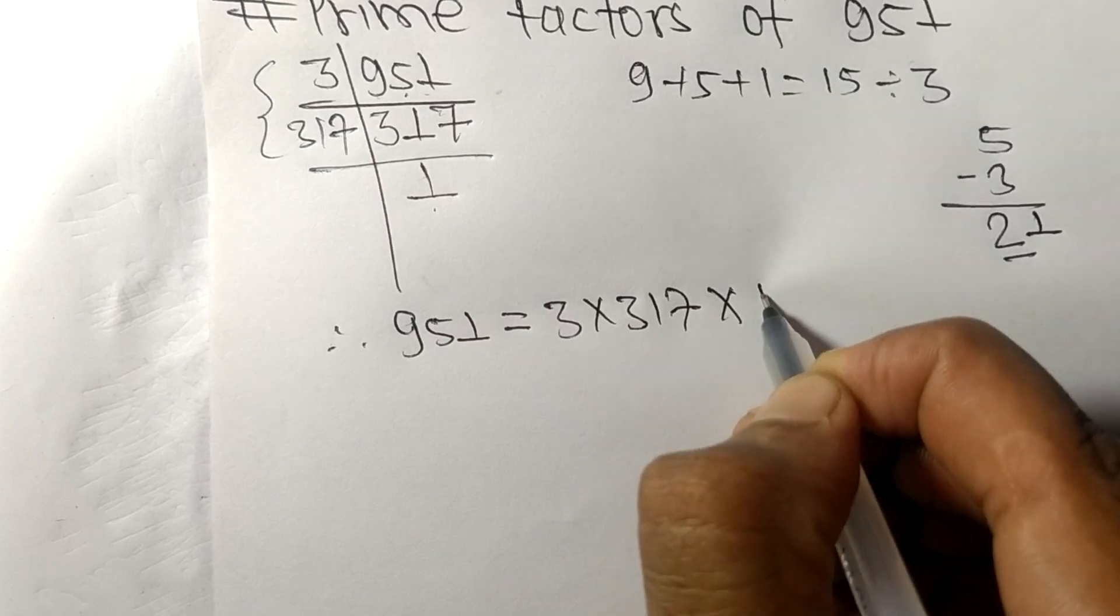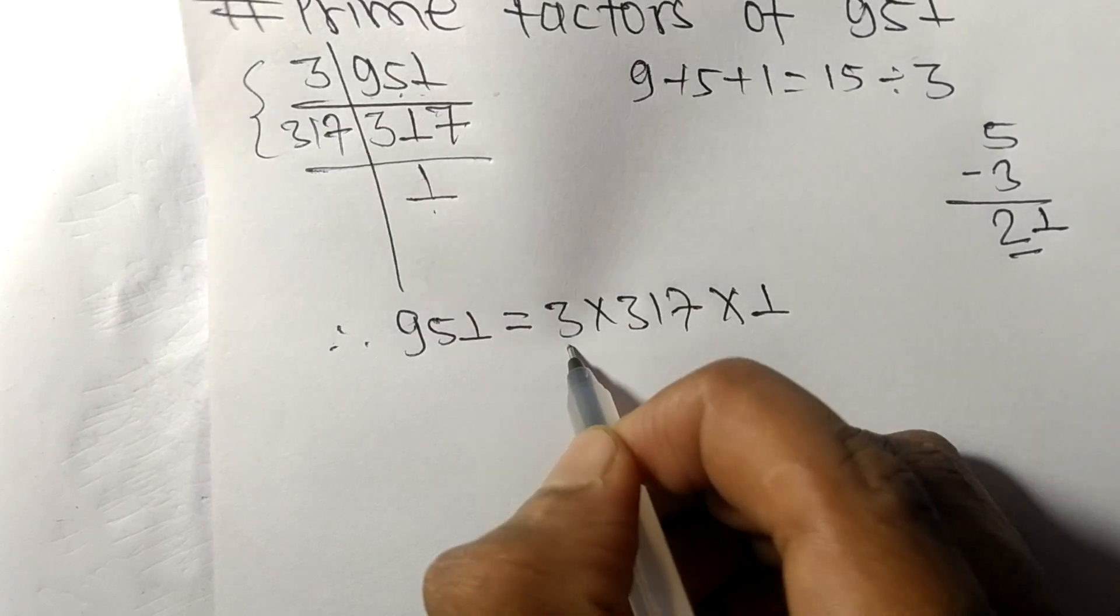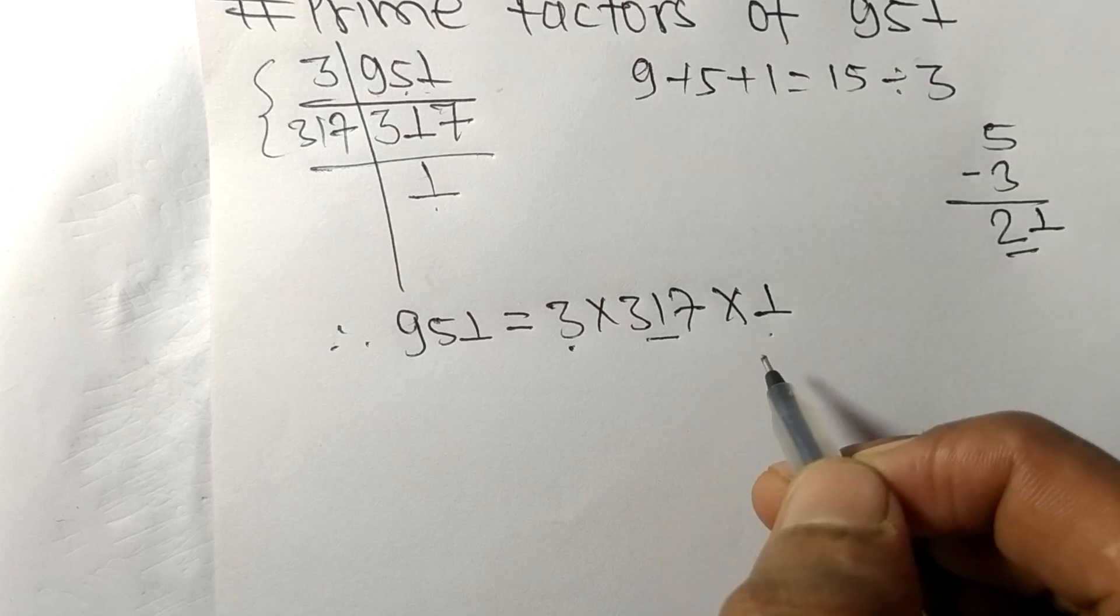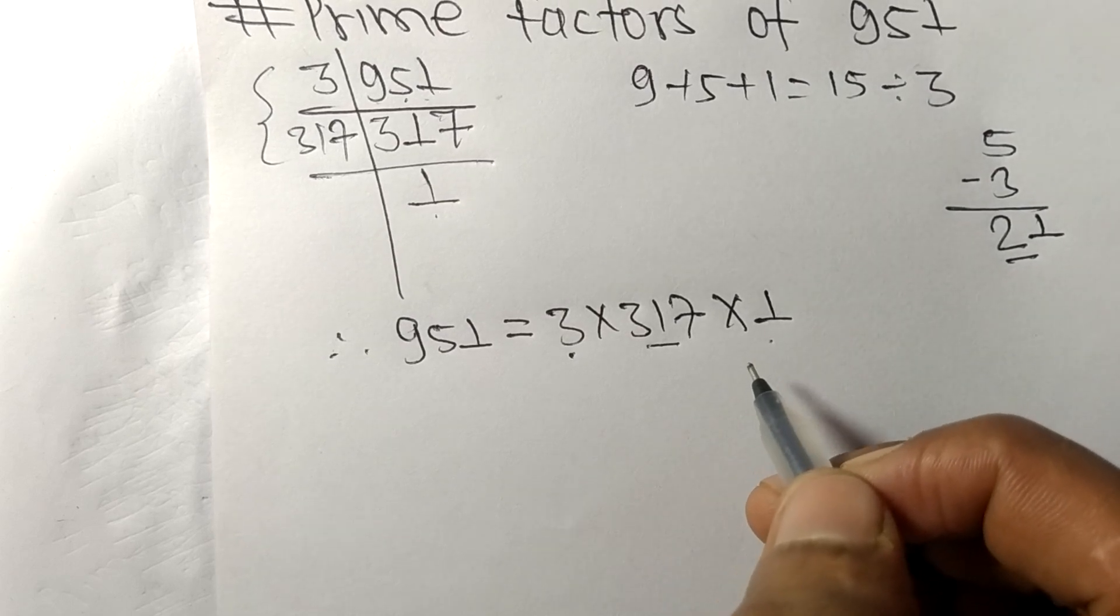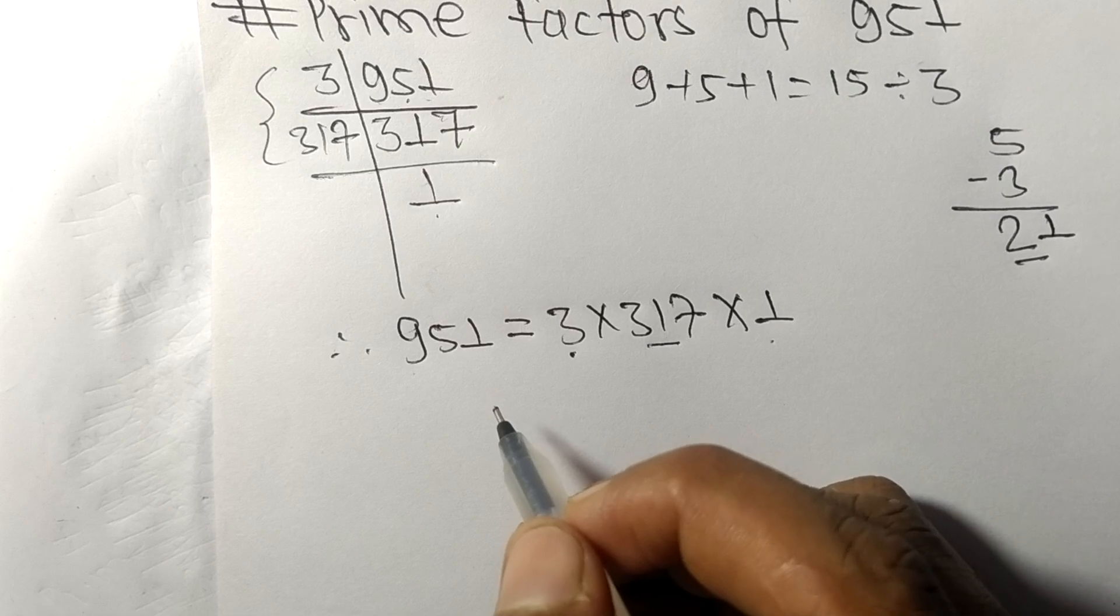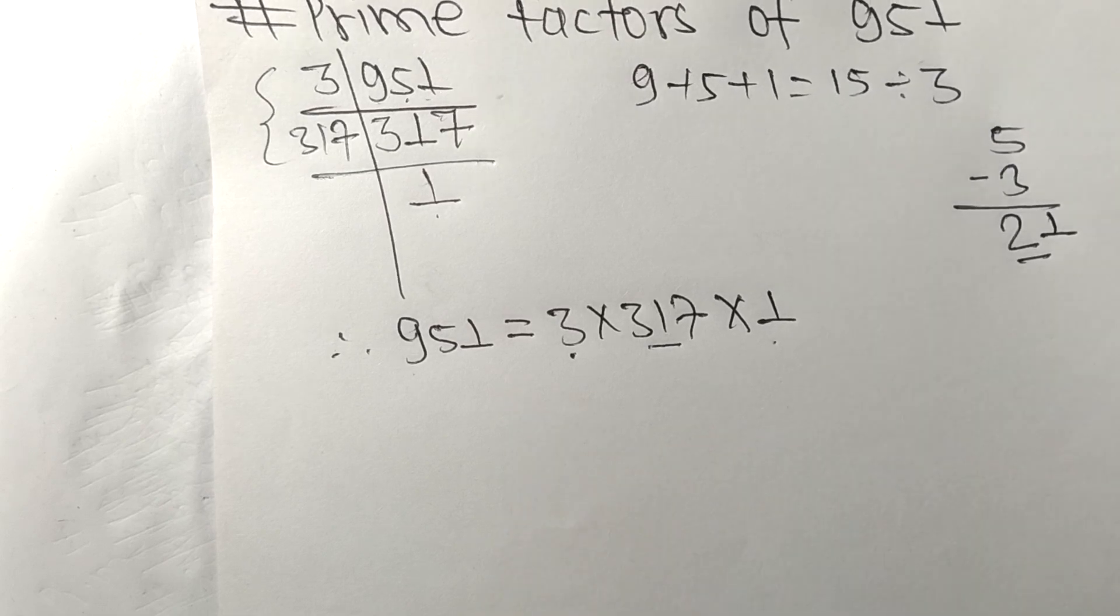From here it is 1, so 3, 317, and 1 are the prime factors of 951. So this much for today, and thanks for watching.